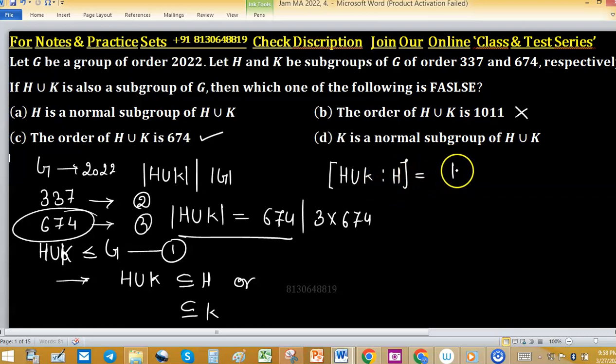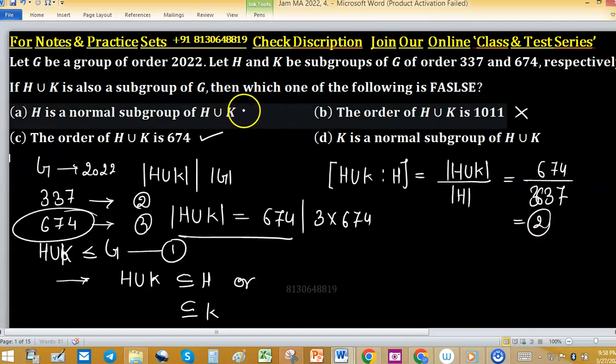So H union K with H, order of union upon order of H. We have order of union is 674 and order of H is 337. So index is coming 2, that's why this becomes normal. Option A is true.